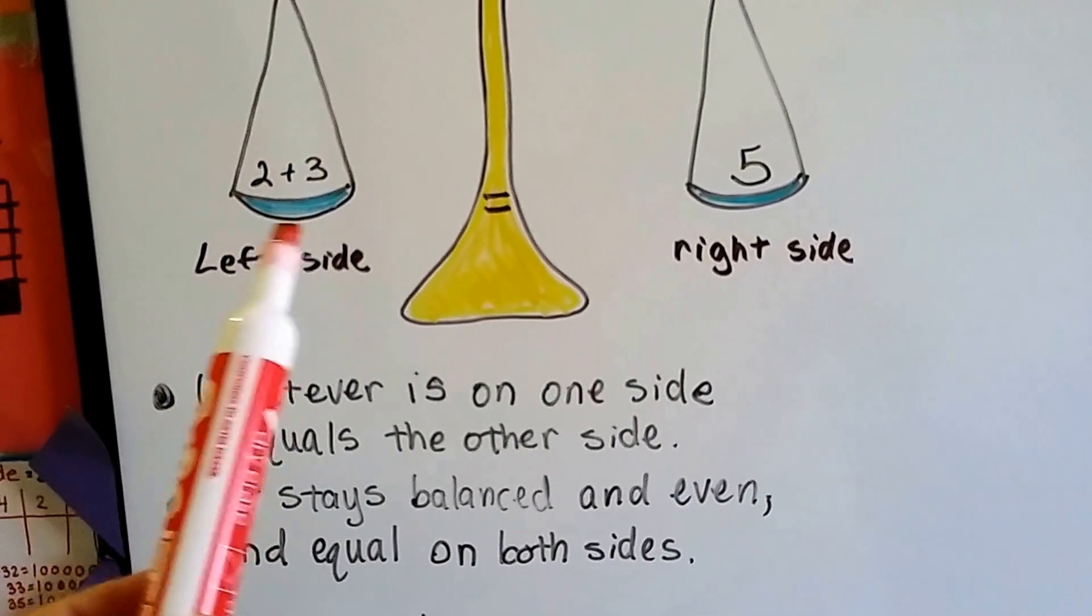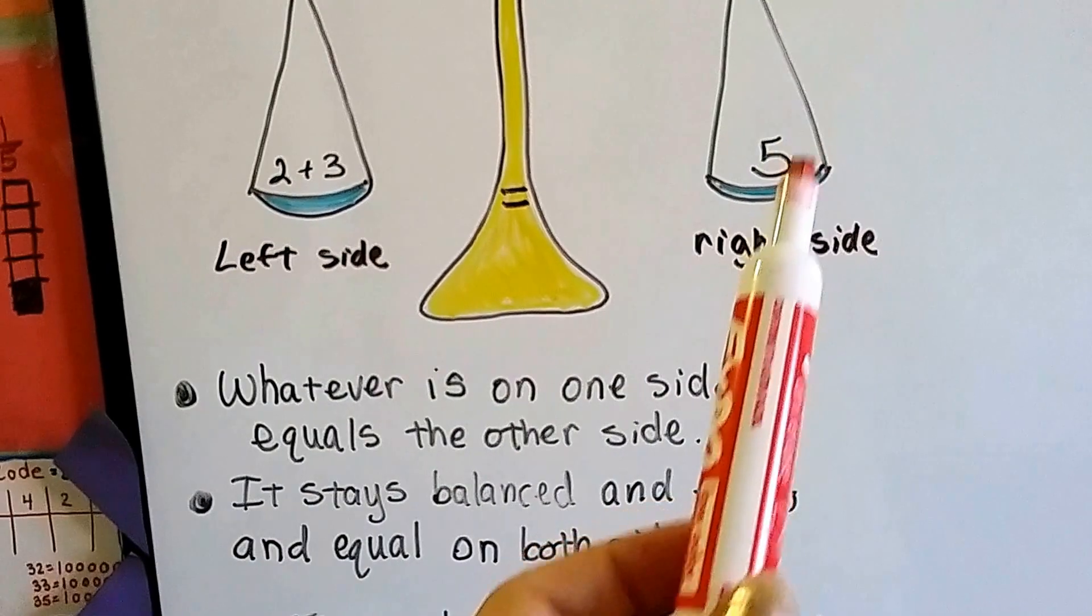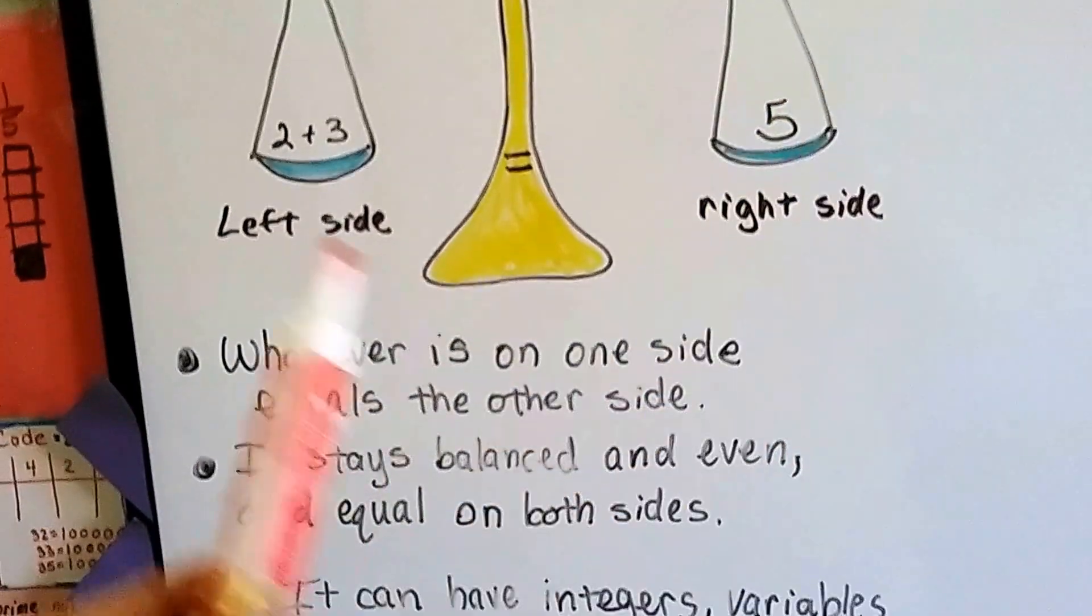Two plus three is five, and we have a five over here, we have five on each side, see?